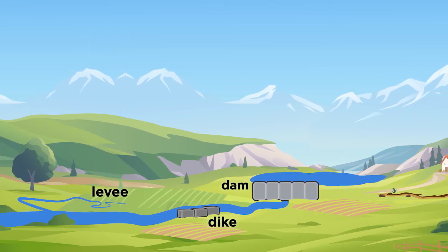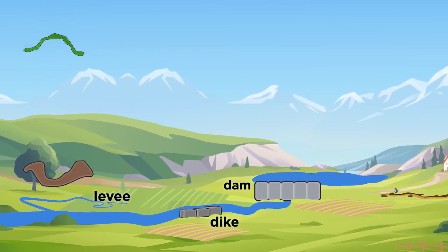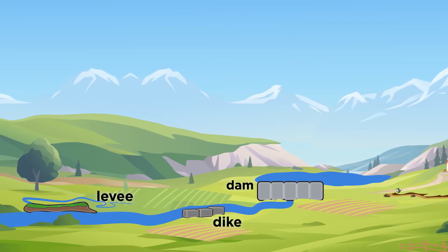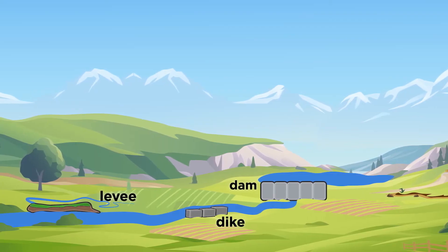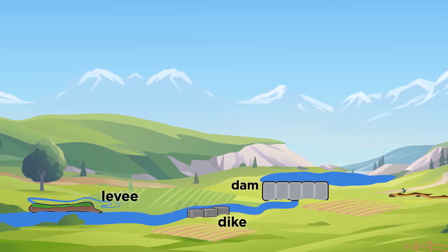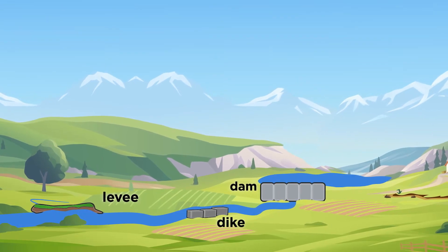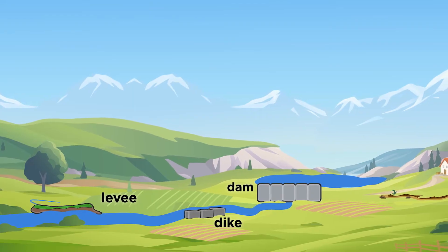A levee is a structure that is similar to a dike. Levees are also built along rivers, streams, and coastlines. Levees are wide banks. They are usually built with dirt, which is then topped with grass or other plants. They prevent water from overflowing and flooding surrounding areas.